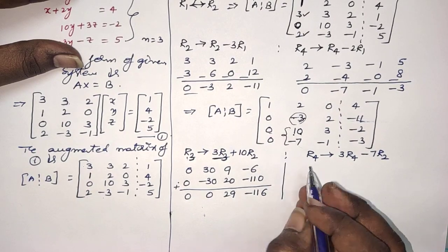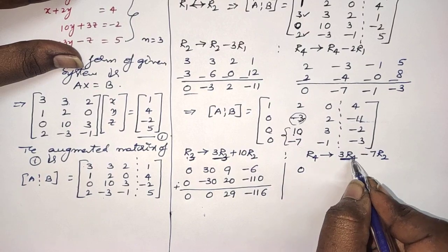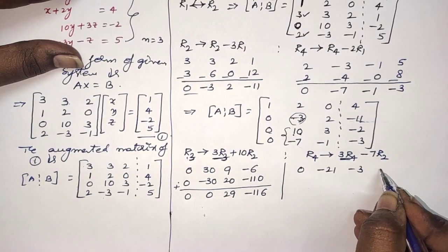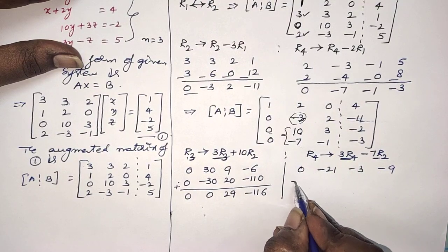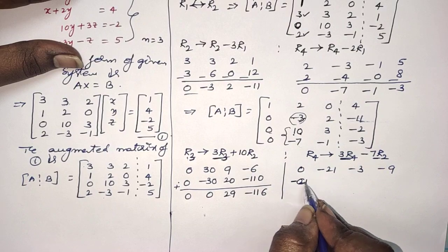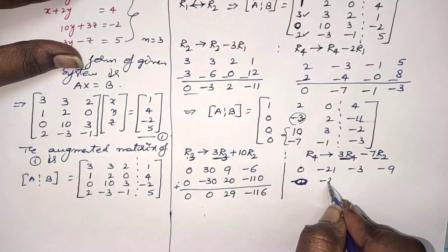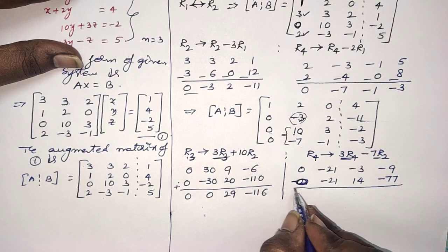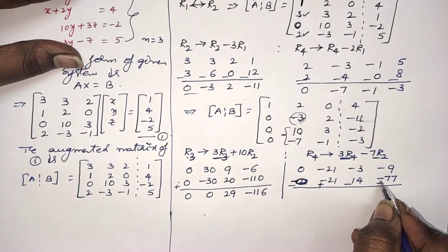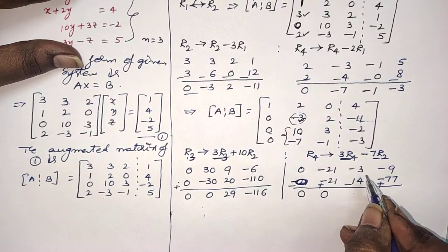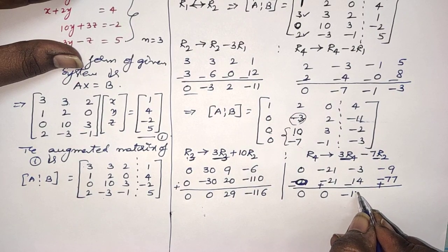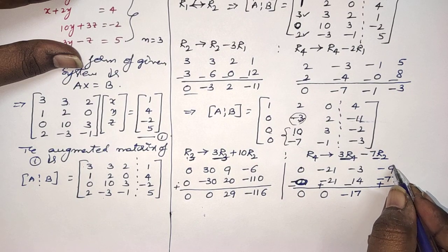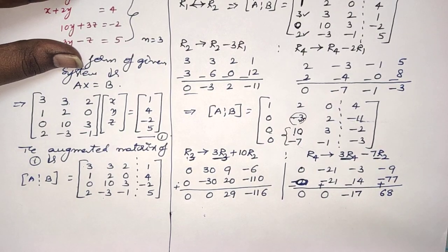Next for R4: compute 3·R4 = 0, minus 21, minus 3, minus 9. Then 7·R2: 0, minus 21, 14, minus 77. Subtracting (3R4 minus 7R2): 0−0=0, −21−(−21)=0, −3−14=−17, −9−(−77)=68. So the new R4 is 0, 0, minus 17, 68.